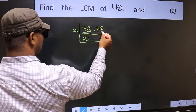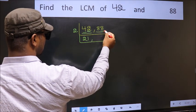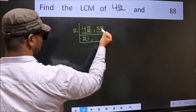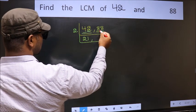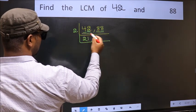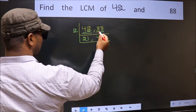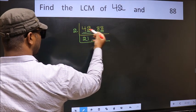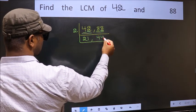Now the other number is 88. The last digit is 8, so this is divisible by 2. The first number is 8 — when do we get 8 in the 2 times table? 2 fours are 8. The other number is 8 — when do we get 8 in the 2 times table? 2 fours are 8.